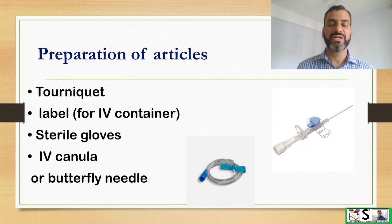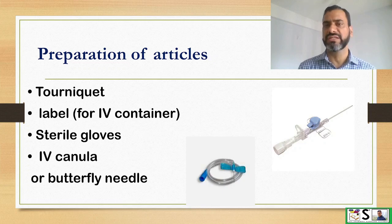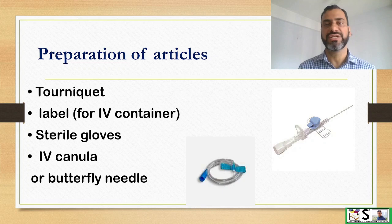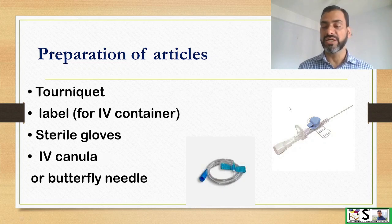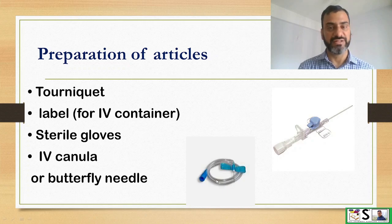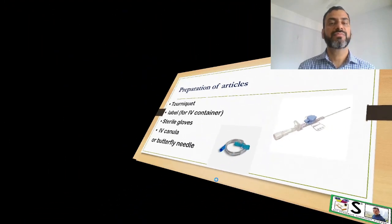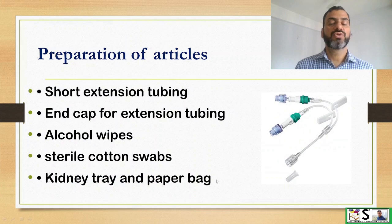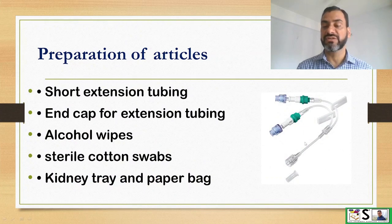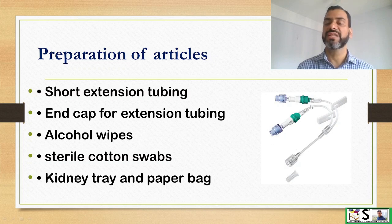One tourniquet, labels for the IV container, drip set, and cannula — three labels total — sterile gloves, IV cannula or butterfly needle, and short extension tubing. Sometimes we use multiple drips through one cannula, so we take these extensions.